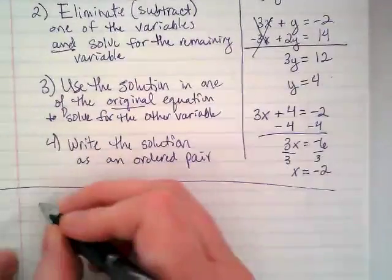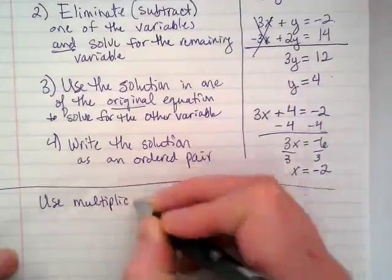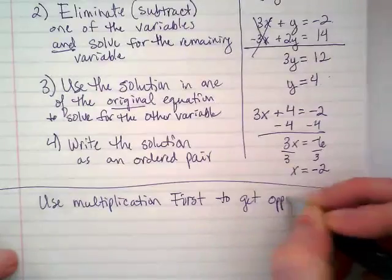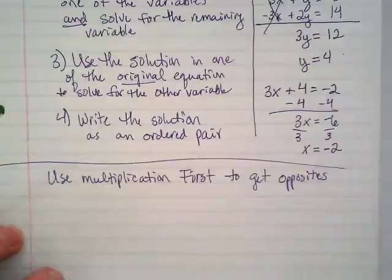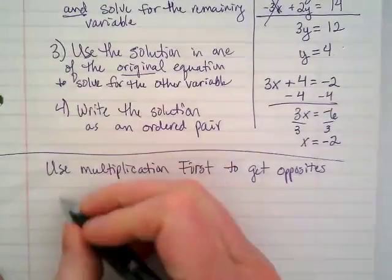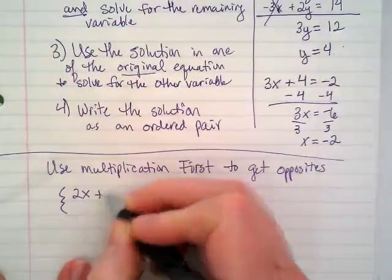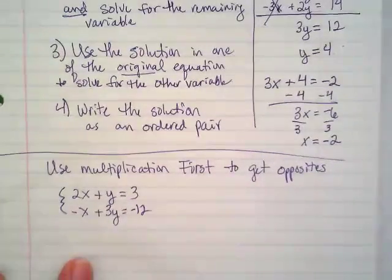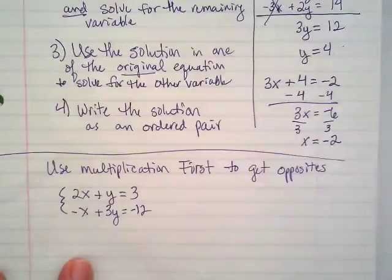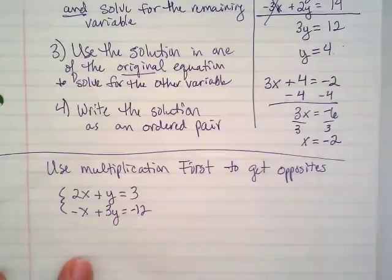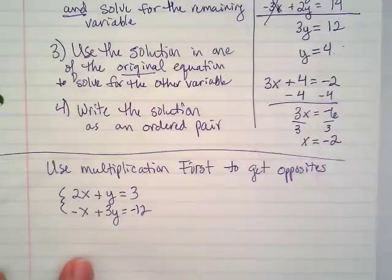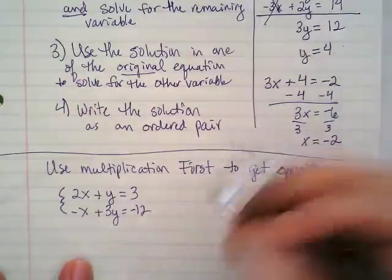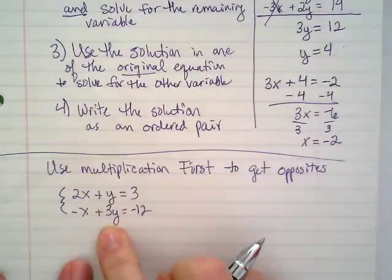That would be when we would need to use multiplication first to get opposites. And we saw examples of that in the video in that really confusing page of tons of equations with the middle guy. Here is my system we're going to use as an example for this. 2x plus y equals 3, and negative x plus 3y equals negative 12. Going through my steps, we don't need to rewrite this because the x's are already lined up and the y's are already lined up. I cannot do step 2 yet because I don't have any opposites in there. So, what I'm going to do first is I'm going to multiply one of these equations by some number to create an opposite.